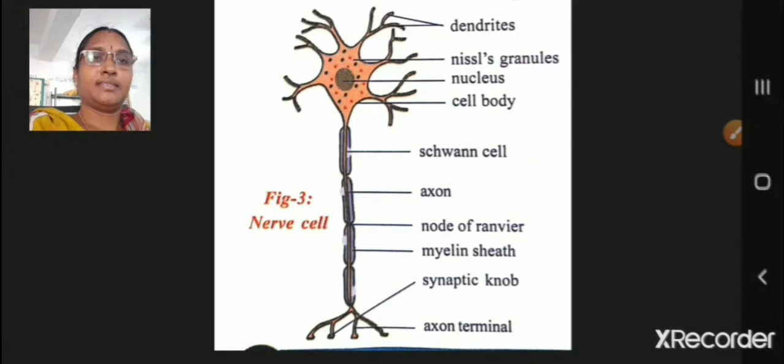Let us see parts of the nerve cell or neuron. Each nerve cell consists of cell body with prominent nucleus.